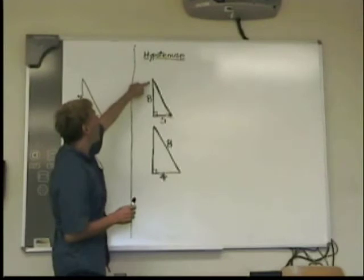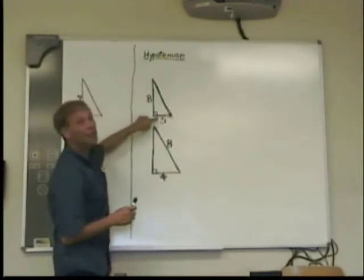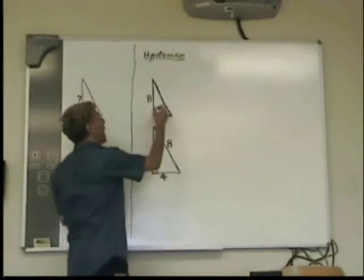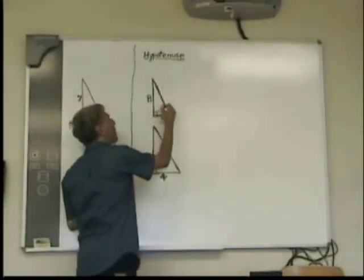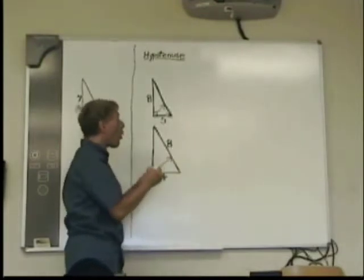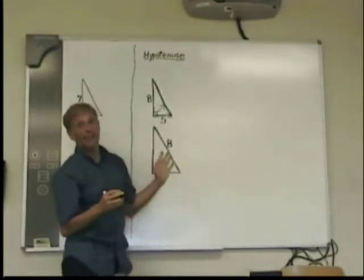Now, you're going to have two straight sides. Those are the legs. They're joined by the right angle. Opposite that is the hypotenuse, and that will always be the longest side.